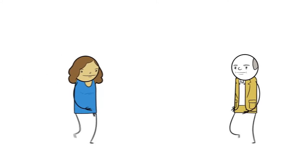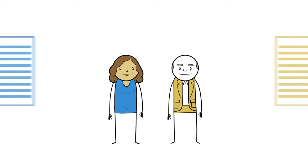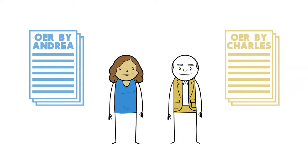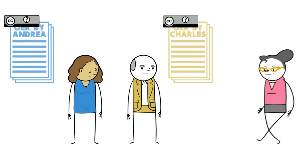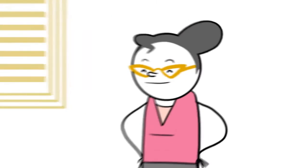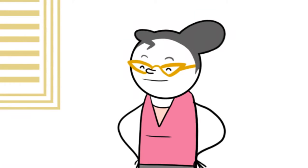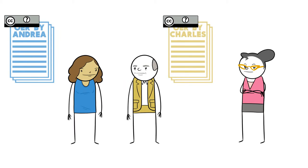This is Andrea and Charles. They are each developing their own chapters of an open textbook to be licensed separately. When they have questions about which license to use, they ask Beth, the scholarly communications librarian. Beth is considered the leading expert on campus in Creative Commons licensing. Most people think she's pretty cool, and Andrea and Charles would agree.